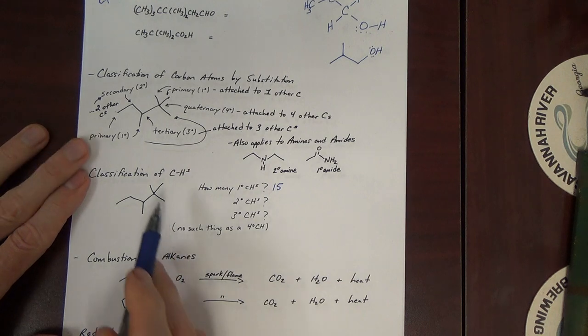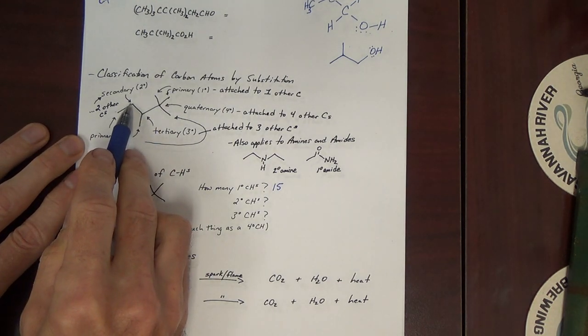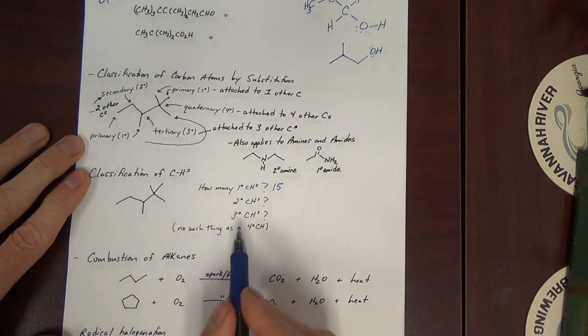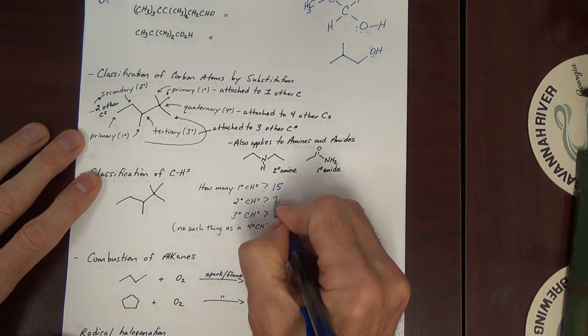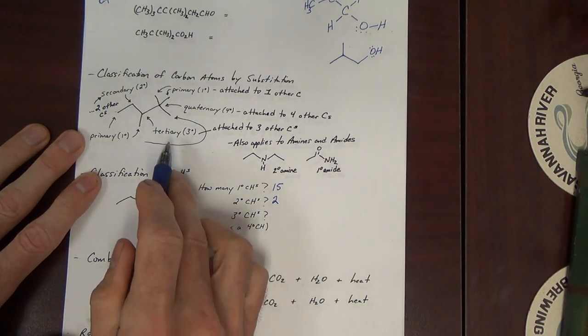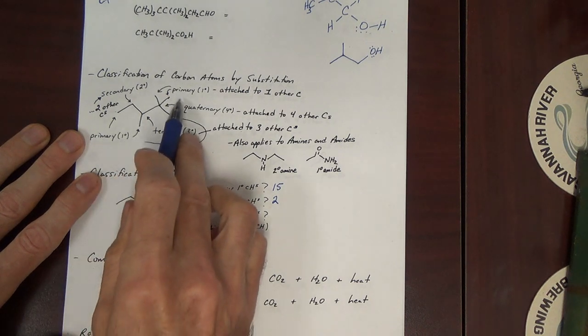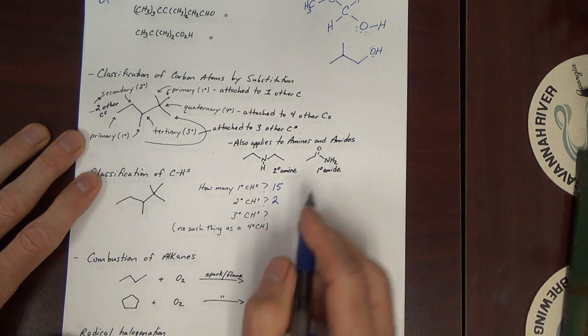How many secondary C-H's? Well, let's look at the secondary carbons. There's only one secondary carbon and it has two H's. So there's two secondary C-H's. Tertiary C-H's. Well, there's only one tertiary carbon and that tertiary carbon has one H on it. So there's one tertiary C-H.